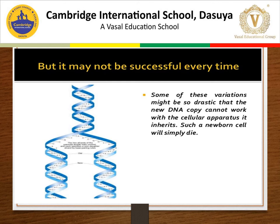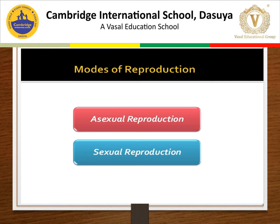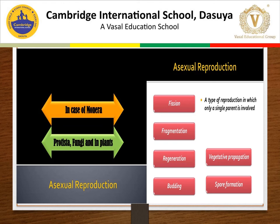Some of the variations are not good. It might be so drastic that the new DNA copy cannot work with the cellular apparatus it inherits — such a newborn cell will simply die. Now we will discuss about modes of reproduction. There are two modes of reproduction: one is asexual reproduction and one is sexual reproduction. Asexual reproduction we will discuss in a separate video in detail, but here I am just going to give a little introduction. When reproduction occurs without the formation and fusion of gametes, it is called asexual reproduction, because it does not involve special cells called sex cells.